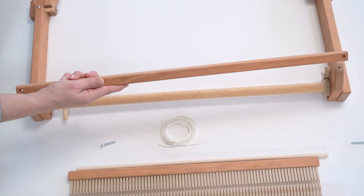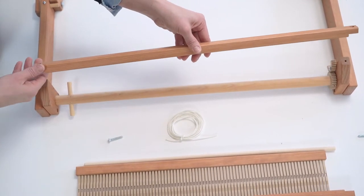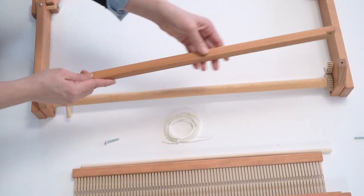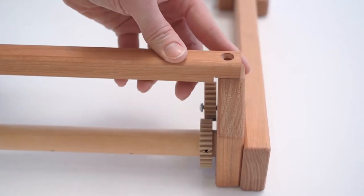To secure the loom in place we'll put a crossbar beam on both the front and the back. The front side is the longer side and so you put the notch side down. Screw.